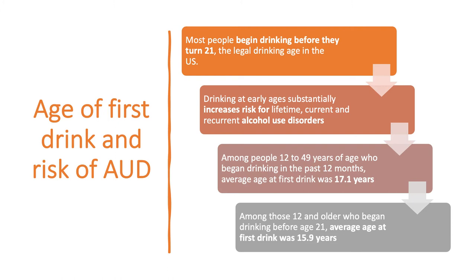Although the legal drinking age in the U.S. is 21, most people began drinking earlier, according to Caetano and colleagues. There is a positive association between age at first drink and a variety of alcohol-related outcomes. Drinking at early ages substantially increases risk for lifetime, current, and recurrent alcohol use disorders. For example, those drinking before age 14 are three times more likely to binge drink — consuming five or more drinks in a day at least once a week — than those who began after age 21.